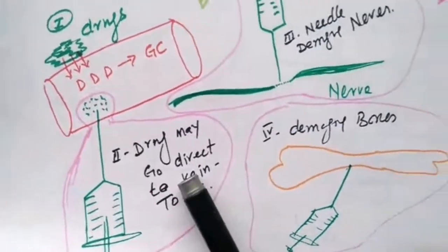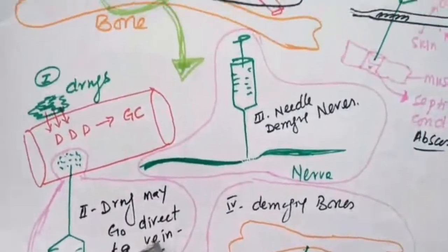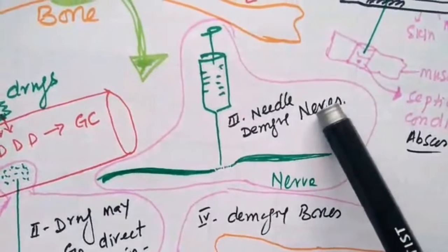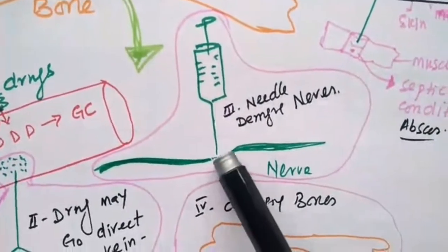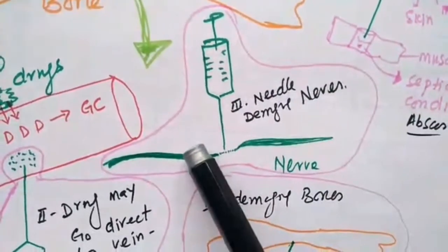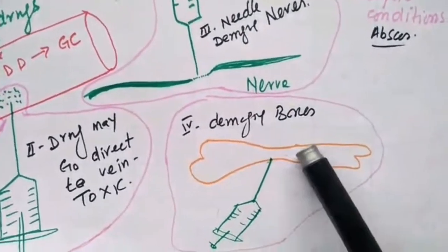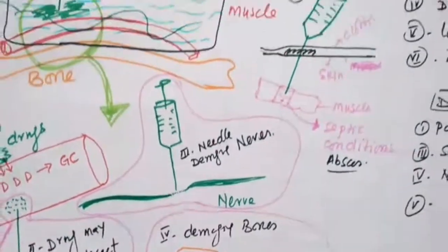This is one toxicity. Similarly, the needle may damage the nerve causing sciatica or other nerve damage. The next problem is they may damage the bone, causing severe pain.